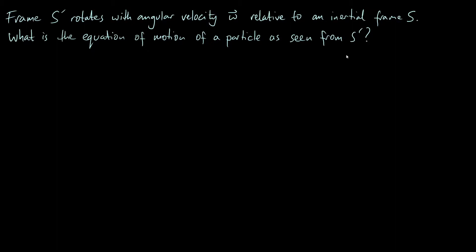So if you're an observer sitting stationary in frame S-prime, co-rotating with S-prime, how do you perceive the motion of a particle? An equation of motion is an equation that links the acceleration of a particle to the forces acting on that particle. In an inertial frame we would just have Newton's second law: F equals ma. So we're trying to find the equivalent of this in a rotating frame.